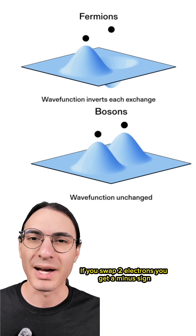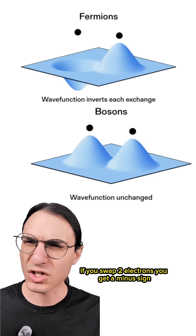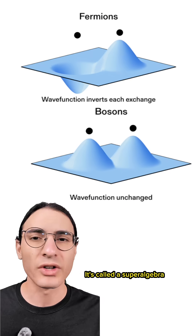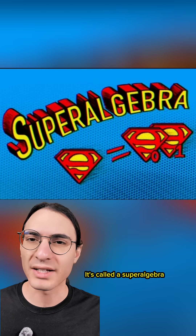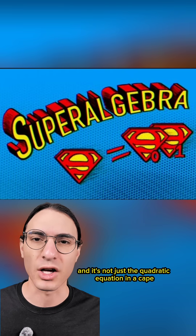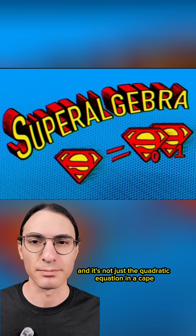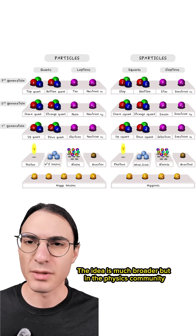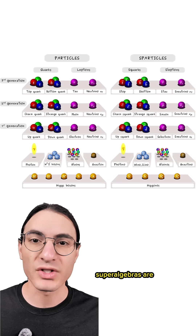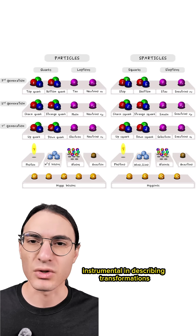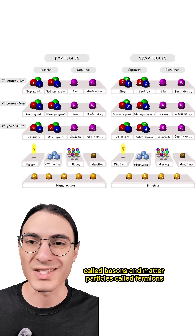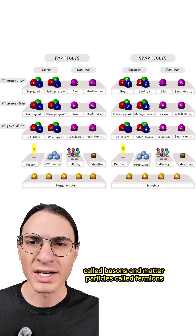If you swap two electrons, you get a minus sign. Did you know that numbers can do that too? It's called a superalgebra, and it's not just the quadratic equation in a cape. The idea is much broader, but in the physics community, superalgebras are instrumental in describing transformations between force-carrying particles, called bosons, and matter particles, called fermions.